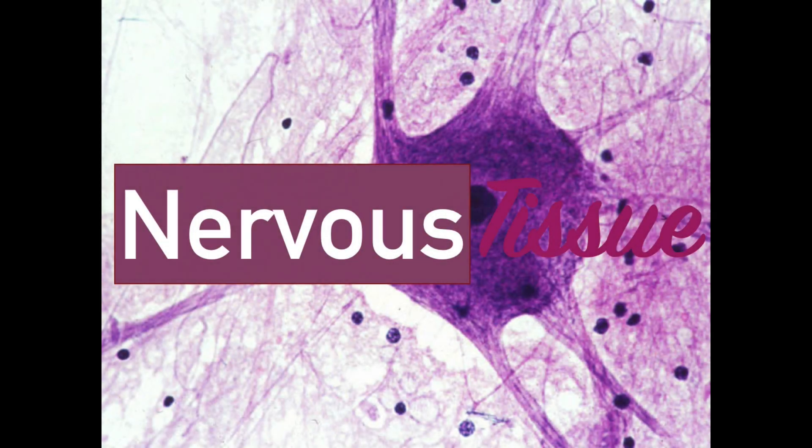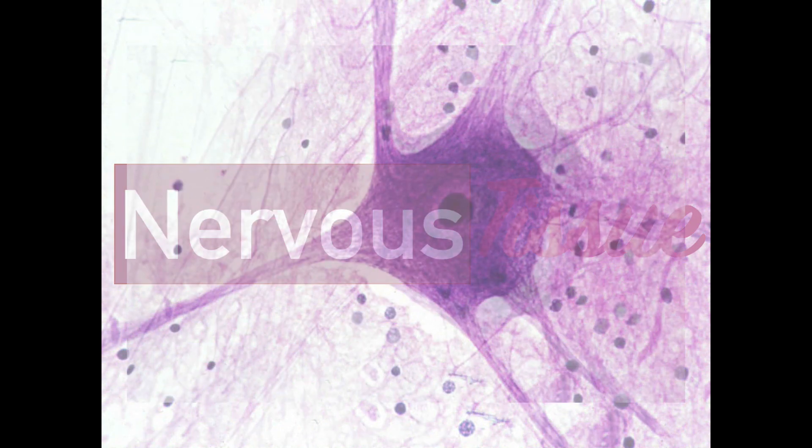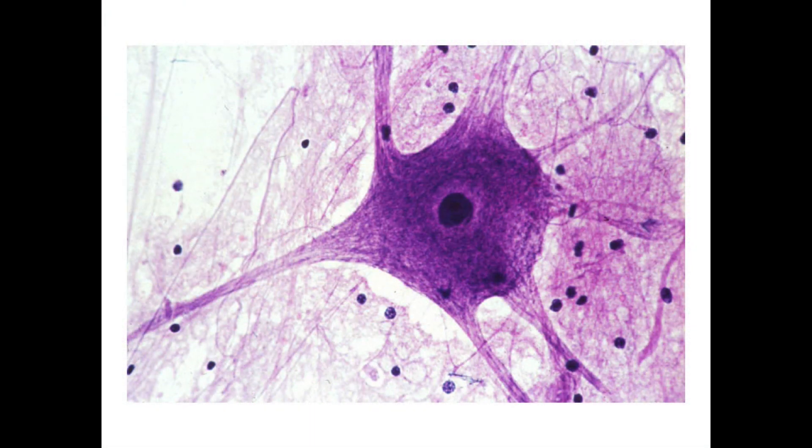Hey guys, welcome to another video for anatomy and physiology. In this video we're taking a look at nervous tissue. Nervous tissue is specialized for communication by means of electrical signals or chemical signs.